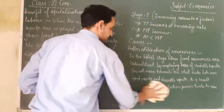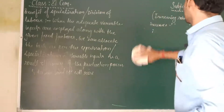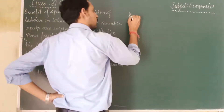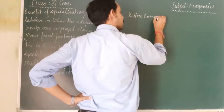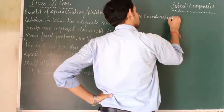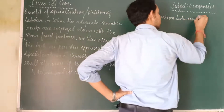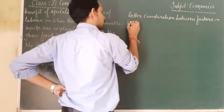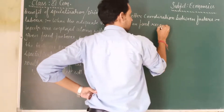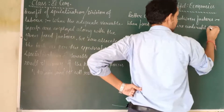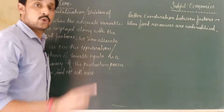The next cause is Better Coordination in the factor ratio — Better Coordination between factors. The straightforward meaning of this is: when fixed resources are underutilized due to underemployment of variable inputs...